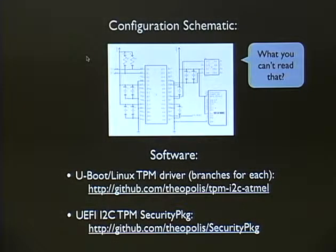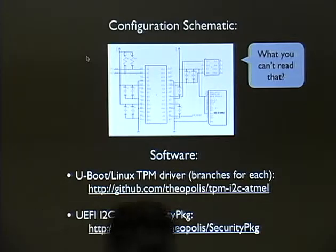Here's the schematic. The software for getting this running in UBoot and Linux is on my GitHub. We'll pass these slides to Shmoocon afterwards. We also have a UEFI modified security package on GitHub. The default security package from TianoCore only uses memory-mapped IO to talk to a TPM. With the I2C bus we don't have that option, so I modified the security package to be more flexible — it now supports I2C.